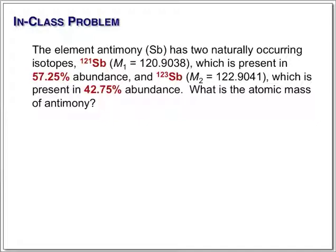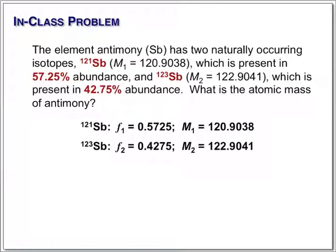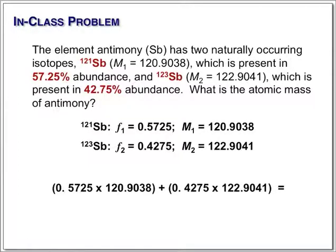First thing to do is to convert the natural abundance into a fraction. We simply do that by moving the decimal point. The calculation is simple. It's just the fraction times the exact mass for each isotope. We add these up, and the exact mass for antimony is 121.76.